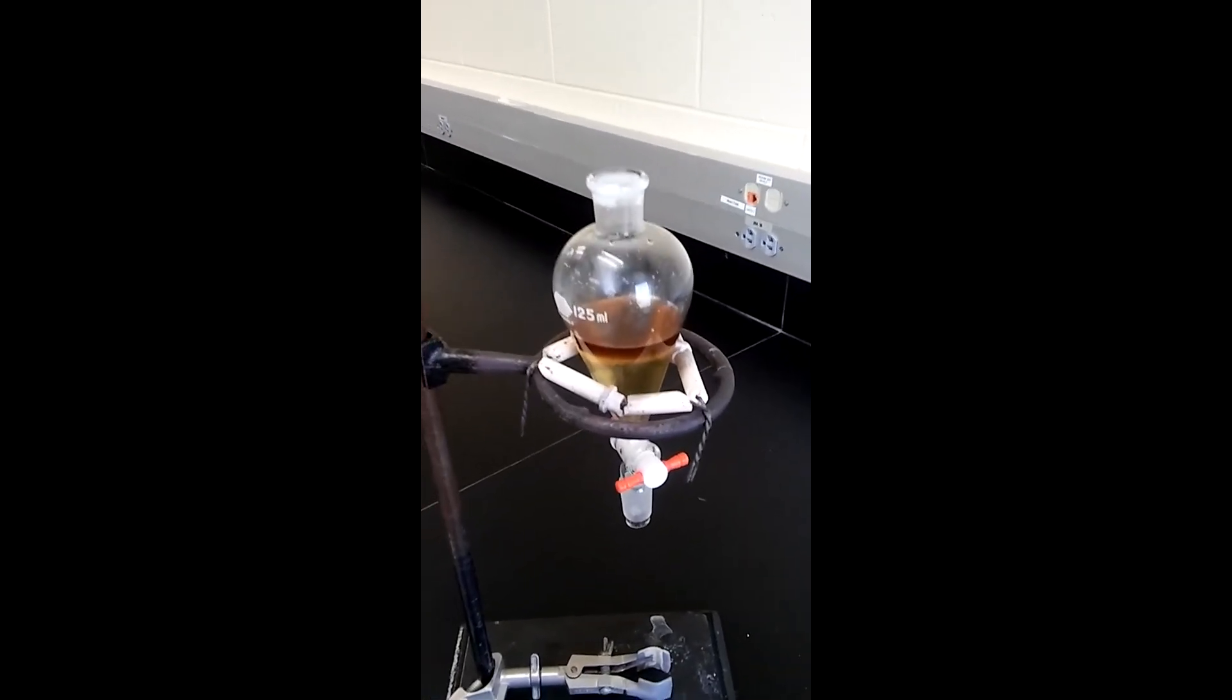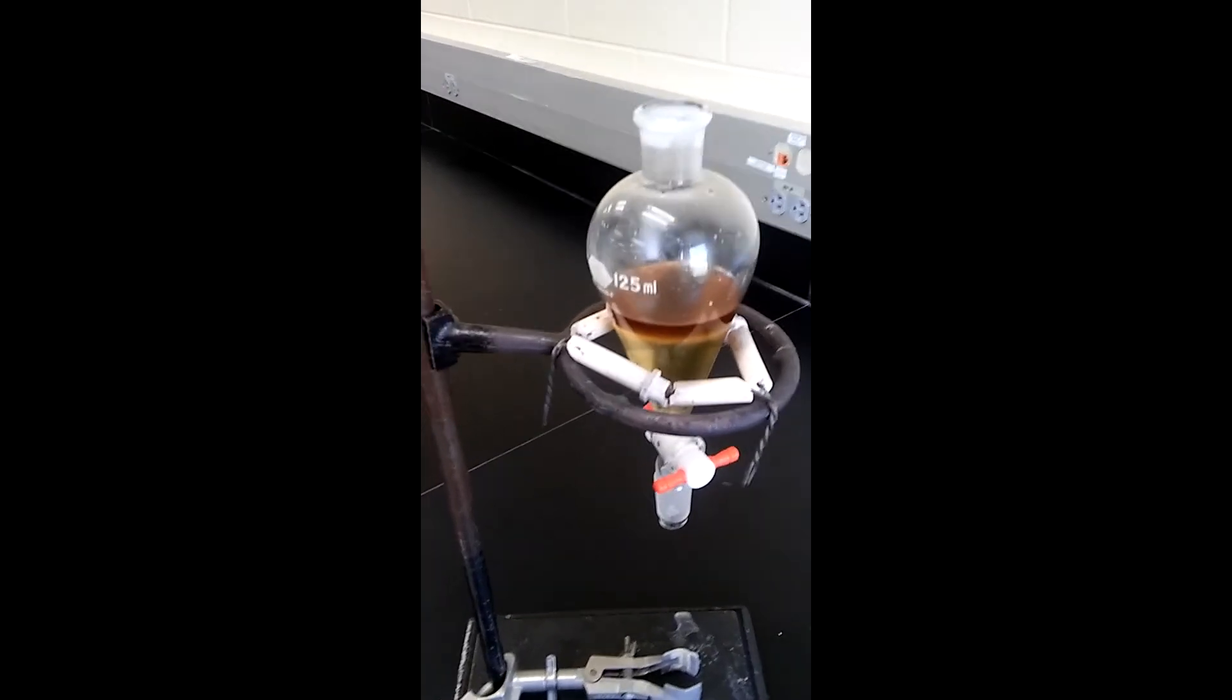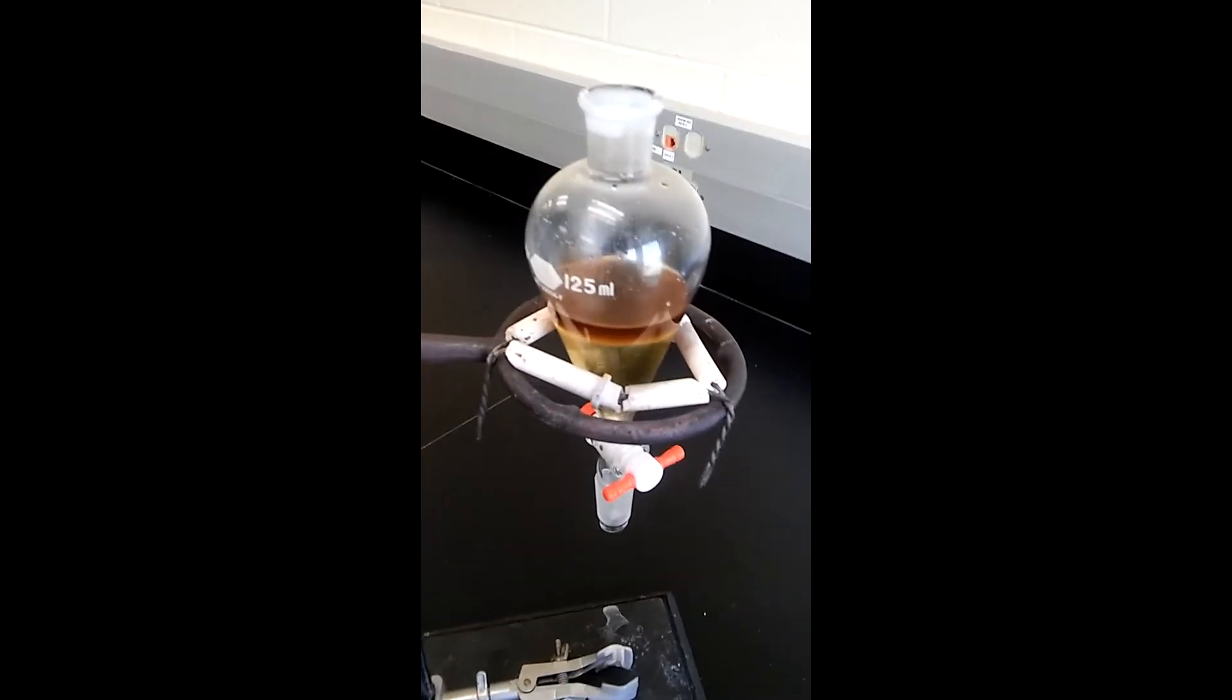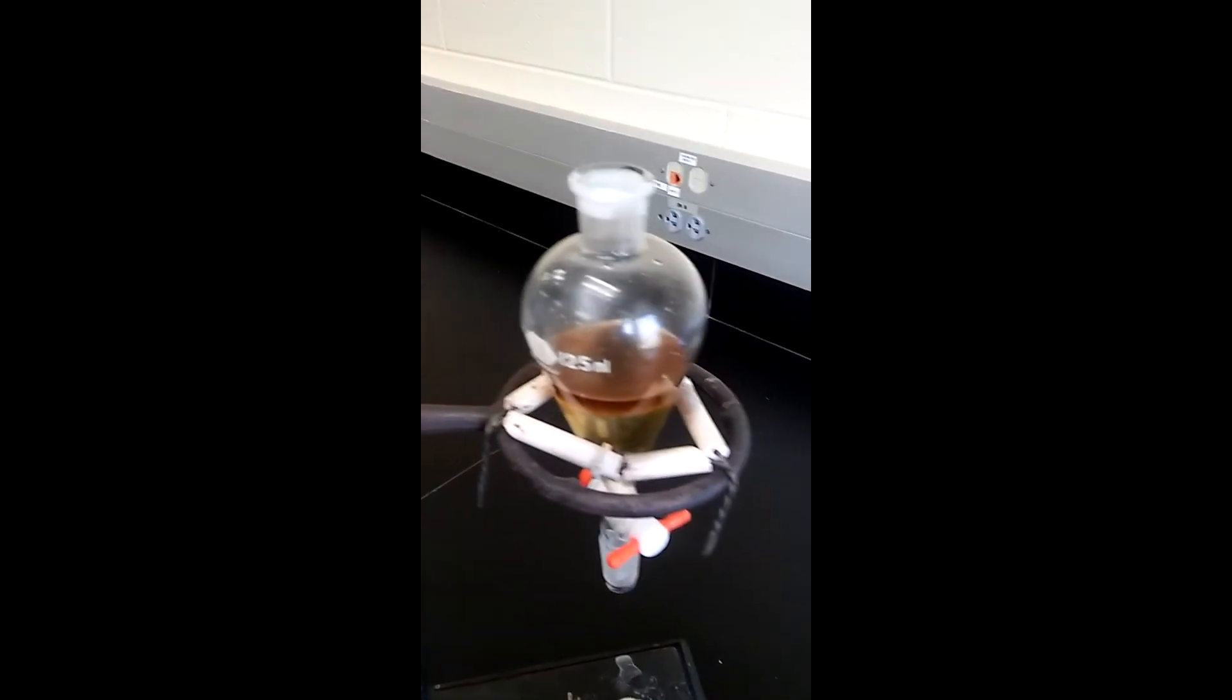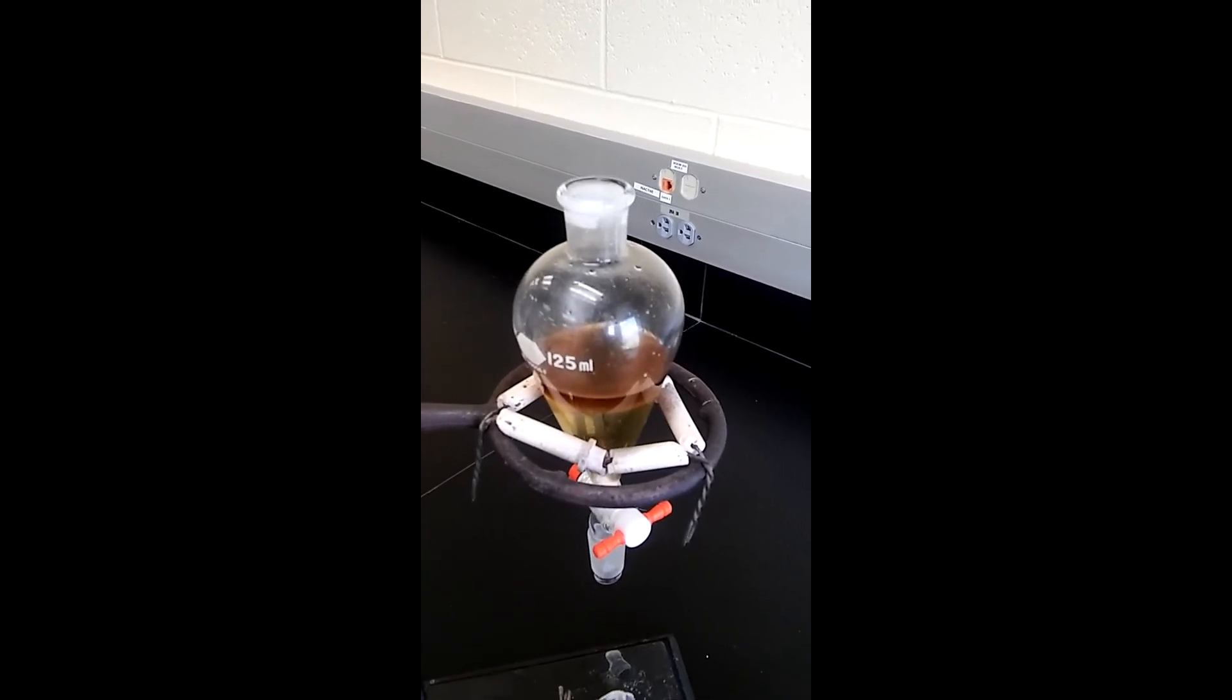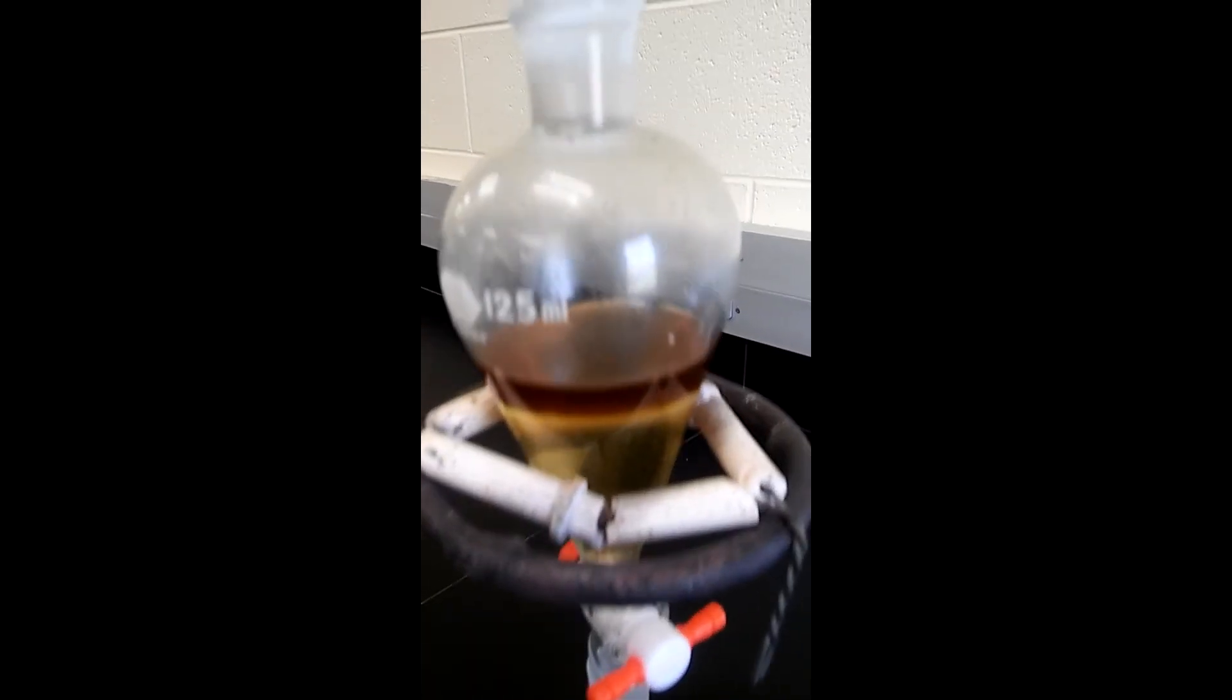I added 30 milliliters of distilled water into the separating funnel, and I also added just a little bit of distilled water into the round bottom flask to get rid of any traces of the product. Then I poured it back into the separating funnel. Now I'm gonna shake it, and then allow the layers to separate.